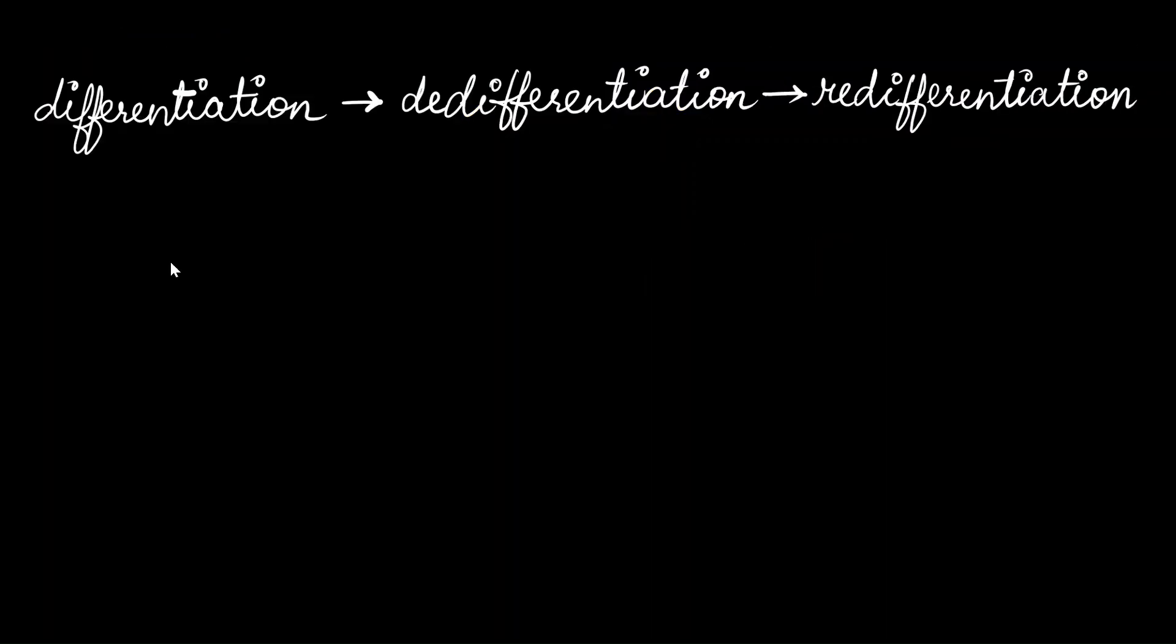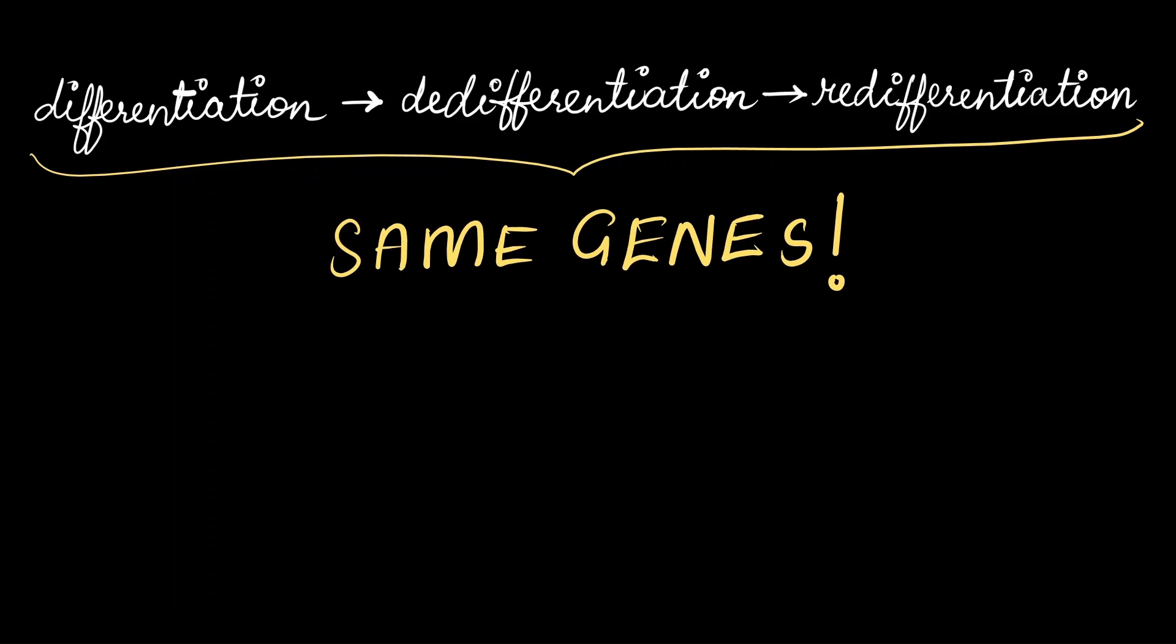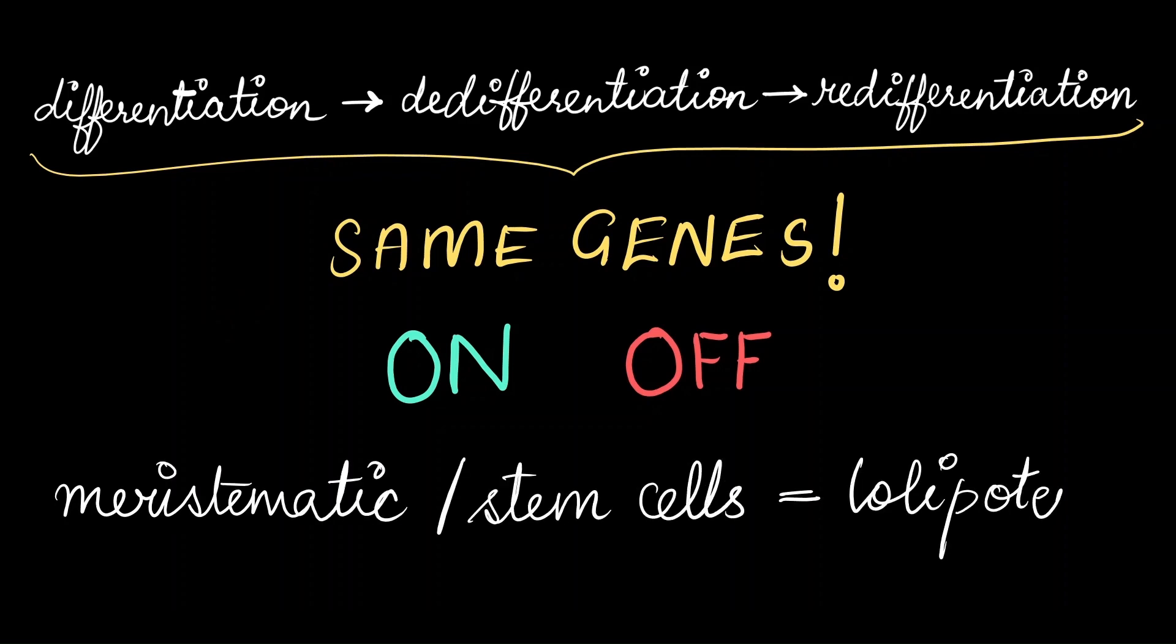Where things get interesting is that during each of these stages, the cell retains all the same genes. But then how is it able to move through these different stages? It's because the cell has the capability to turn genes on and off. So meristematic cells or stem cells are totipotent, meaning they can be made to form any type of cell or do any type of function by controlling which genes are on and off.